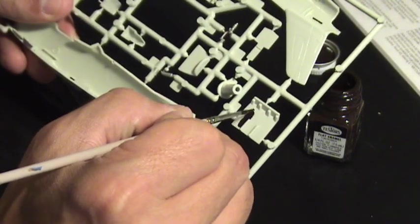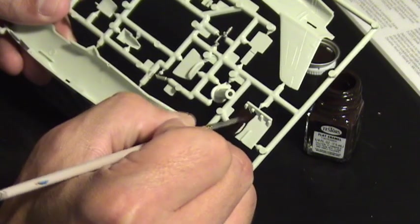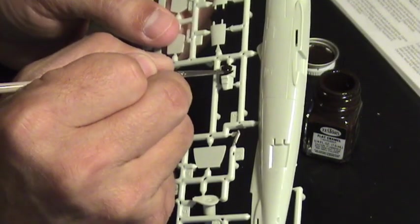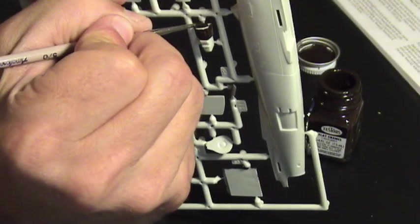Now we continue painting the small parts using a different color. Having the small parts still attached to the sprue makes it easy to handle them. Make sure you do not touch the freshly painted parts to avoid fingerprints. We proceed to paint the internal cockpit components.